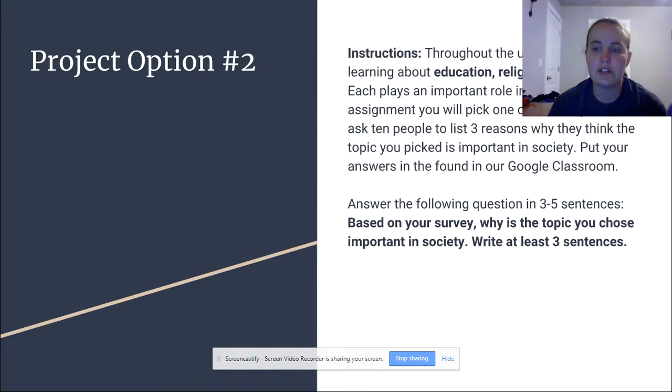Answer the following question in three to five sentences. Based on your survey, why is the topic you chose important in society? Write at least three sentences. Sorry for the typo, I should have caught that earlier.